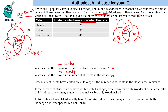The next question asks: how many students have visited only Flamingo if the number of students in the class is the minimum? This is the minimum case. 'Only Flamingo' means they have not visited Robin and Woodpecker. In the negative Venn Diagram, 'Robin and Woodpecker not visited' corresponds to the value 20. So 20 students have visited only Flamingo.